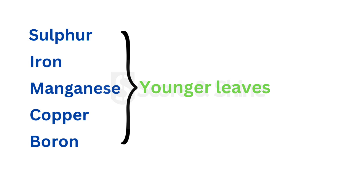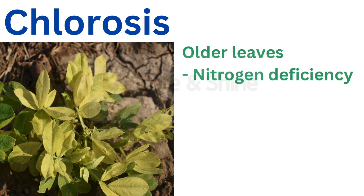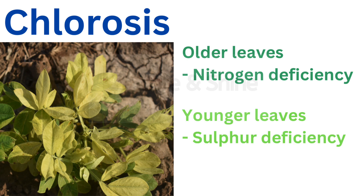Moving on to particular nutrient deficiency symptoms which are most confusing: firstly, chlorosis, which means yellowing of leaves where loss of green color occurs. Chlorosis of older leaves is due to nitrogen deficiency, and chlorosis of younger leaves is due to sulfur deficiency.